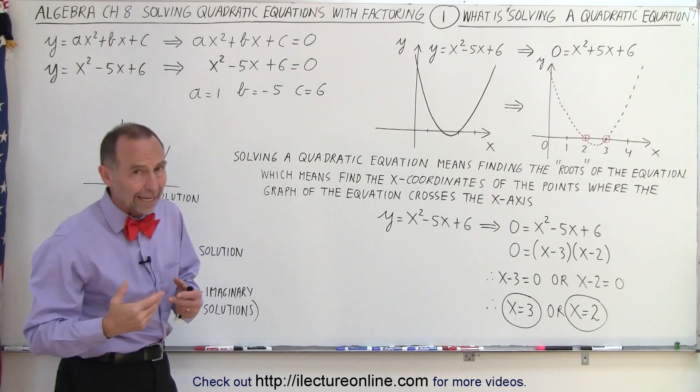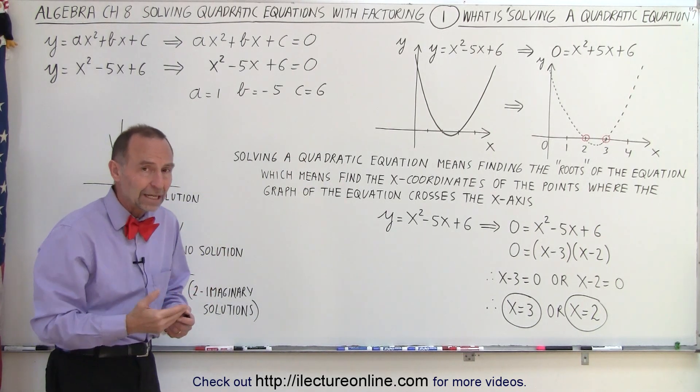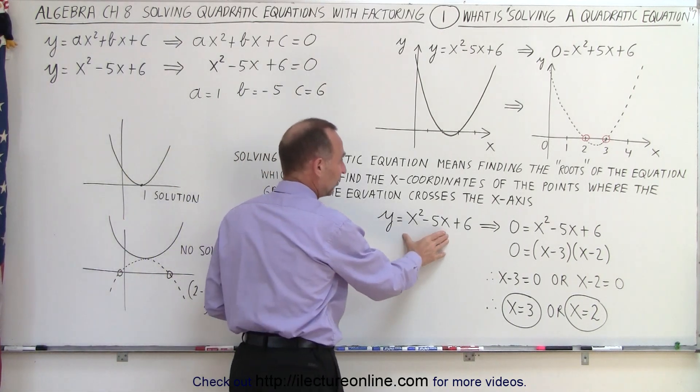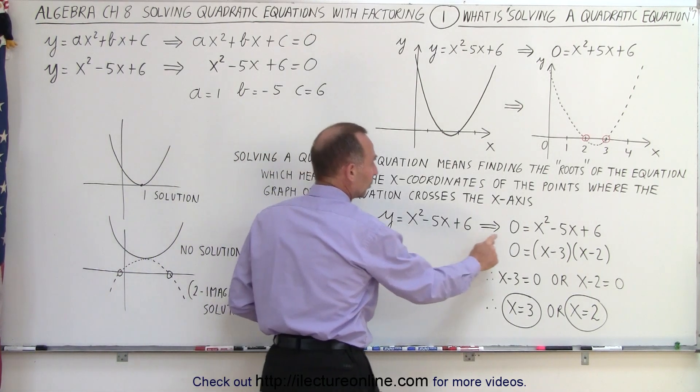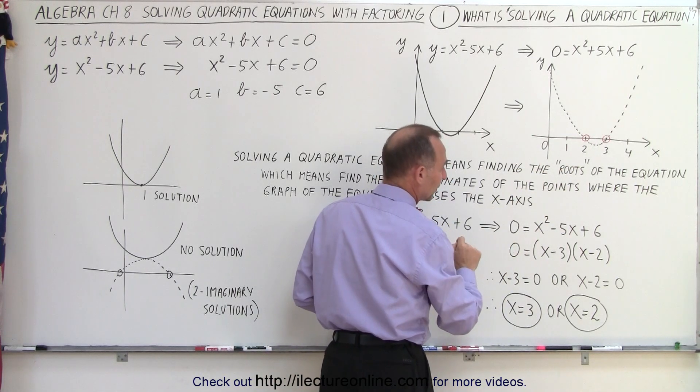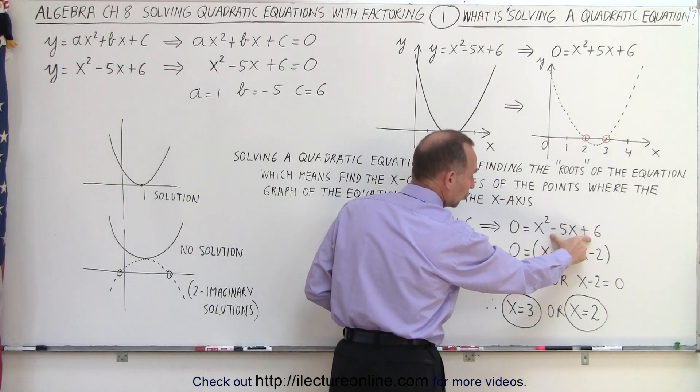So how is that done? Well, again, that's where we need the various techniques and we're going to practice here on the technique of factoring to do that. Essentially, we take the equation like this. We set the y equal to 0 because that's where we find the places where the function crosses the x-axis. Then we solve for that by factoring this trinomial.